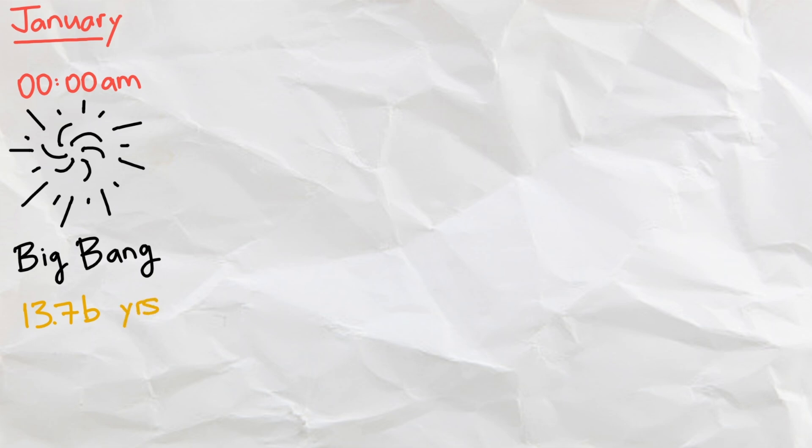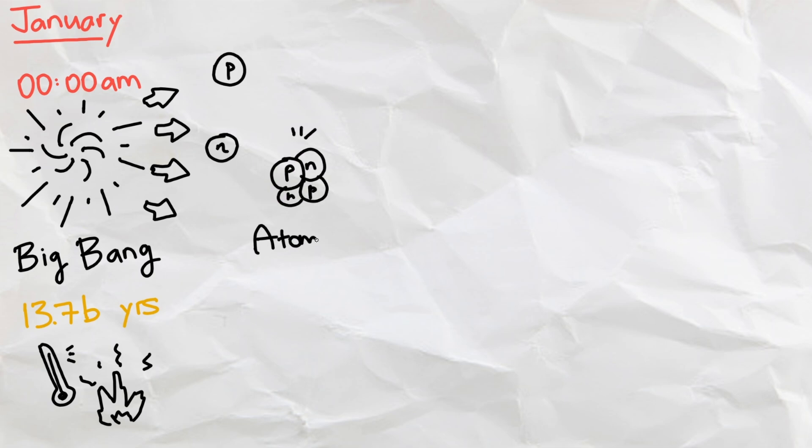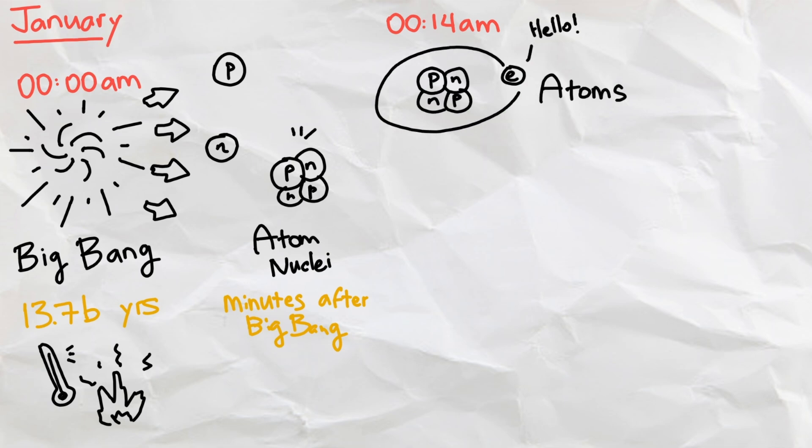Starting from the beginning, January 1st, 0 o'clock, marks the Big Bang 13.7 billion years ago. We don't know what happened here, but we do know that the universe at this point was very hot and dense, and was rapidly expanding. Within minutes after the Big Bang, protons and neutrons formed and merged together to form nuclei. And after 380,000 years, electrons become trapped in the nucleus orbits, forming the first atoms at 0:14 AM on our cosmic calendar.